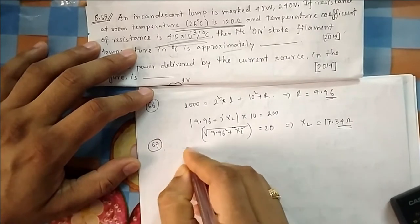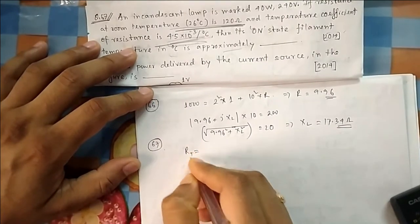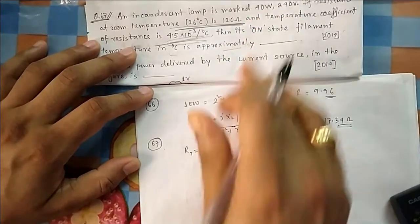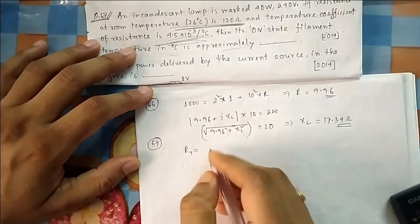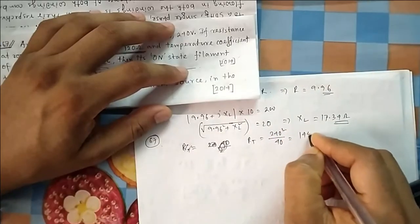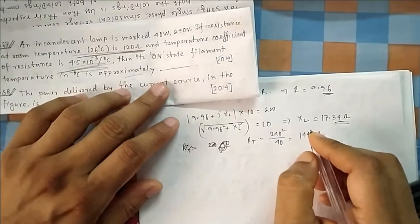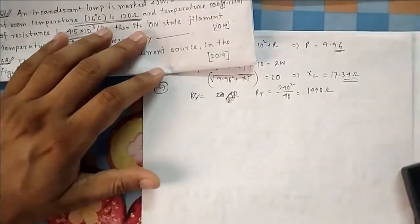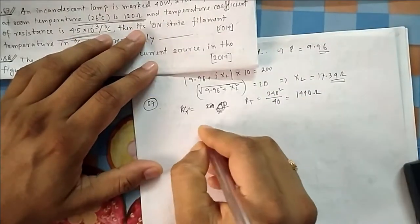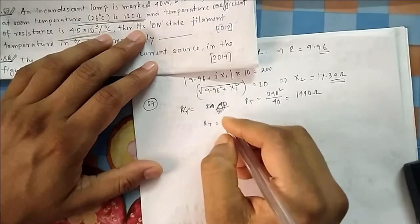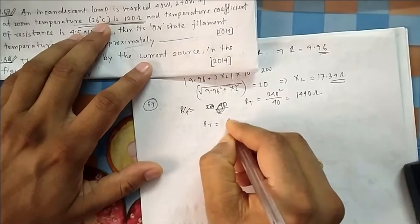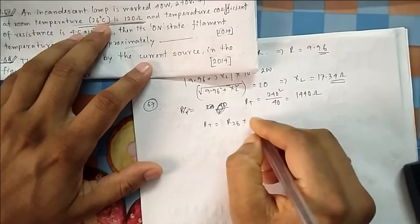From the bulb rating, you can calculate RT — the resistance at the temperature at which the bulb delivers 40 watts. It is V²/P = 240²/40 = 1440 Ω. At room temperature it is given as 120 Ω. This large resistance has come about due to the temperature increase.